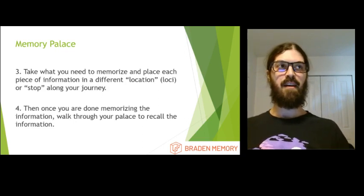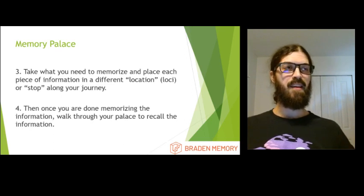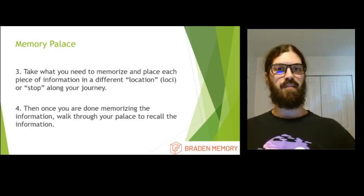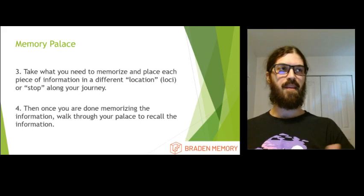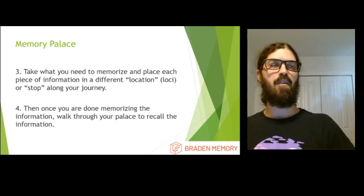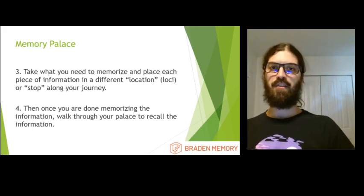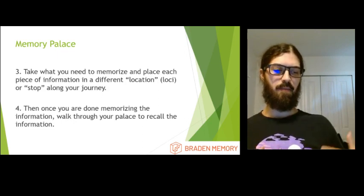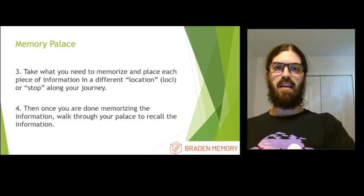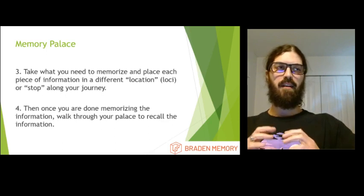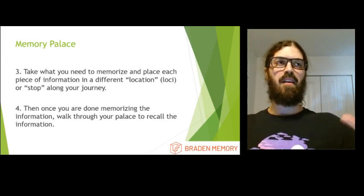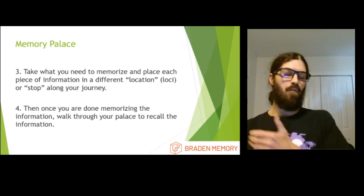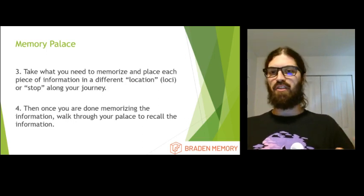Now we go back to the beginning of that memory palace journey. Location one — the front area: bananas. Open the door: eggs everywhere, that's number two. Turn into the kitchen, the sink is full of milk — number three. Bread in the oven — number four. The island covered in ice — number five. Those are our five items. That's a quick, simplified version of how you construct and use a memory palace.